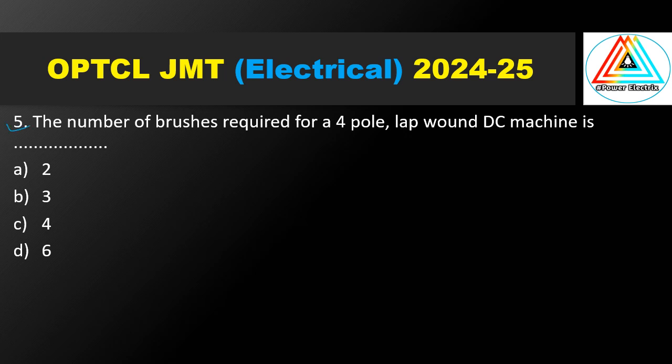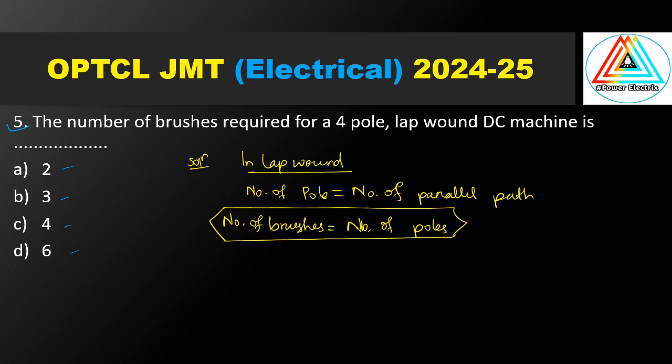Question number 5. The number of parallel paths required for a 4-pole lap-wound DC machine — options: 2, 3, 4, and 6. The number of parallel paths equals the number of poles. So number of parallel paths equals 4. Option C is correct.